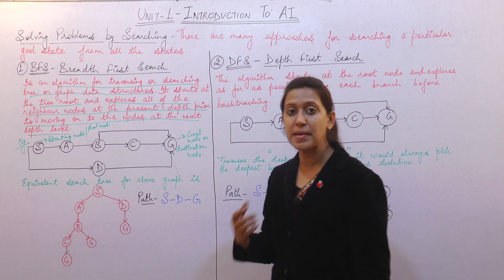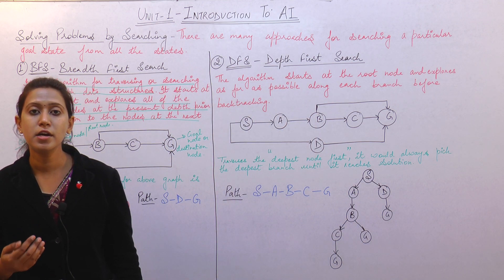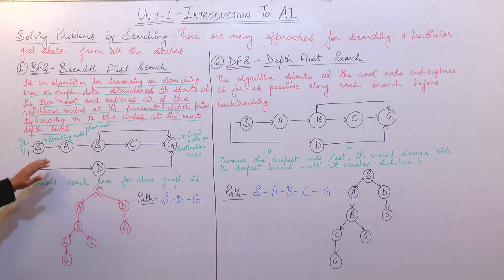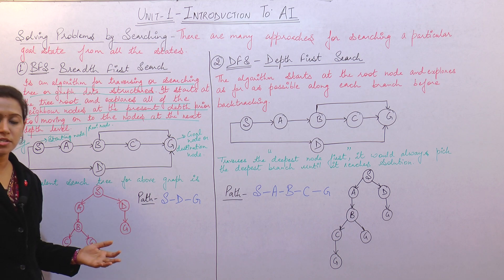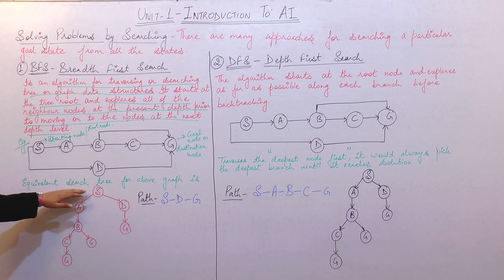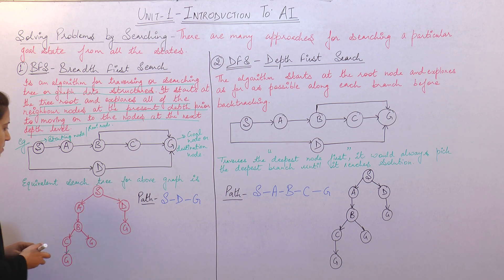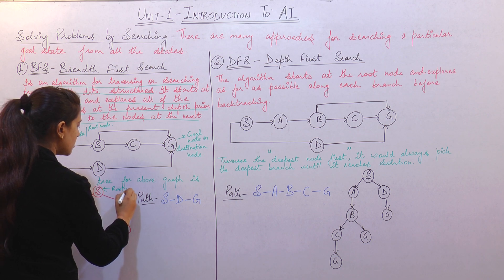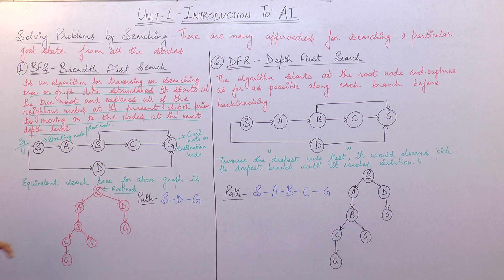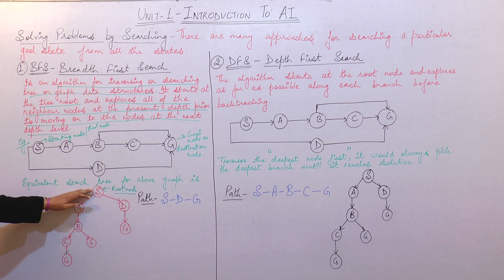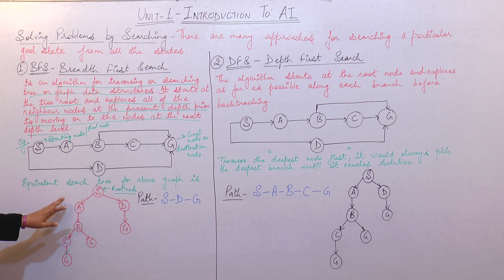Now we will search the minimum possible path from root node S to goal node G. We start traversing from root node S. For reaching the goal node we have two paths: from S to A and from S to D. If we take the path from S to A, we traverse to A and then to B.